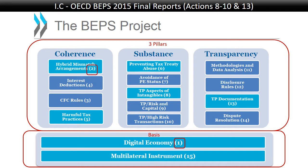The next action point was hybrid mismatch arrangements. To fix the coherence of the system, we need to make sure that things are qualified the same everywhere, and we need to stop having instruments or rules which allow one country to say an instrument is debt and another country to say it is equity, where in the end you get an interest deduction in the debtor country but no pickup for that interest income in the creditor country because the creditor country exempts it as a tax-free dividend.